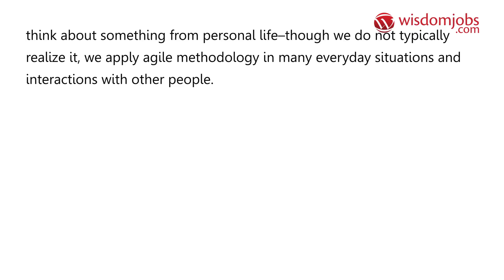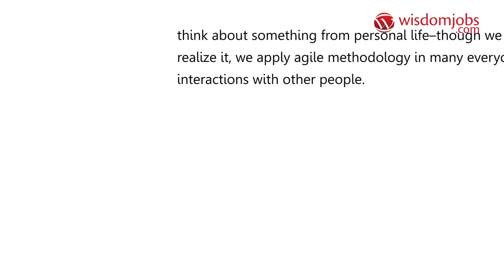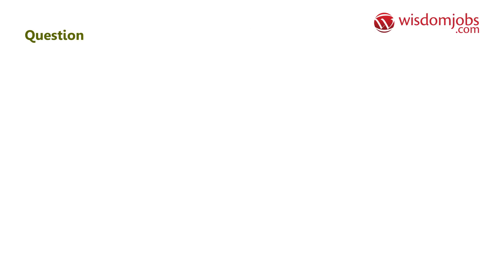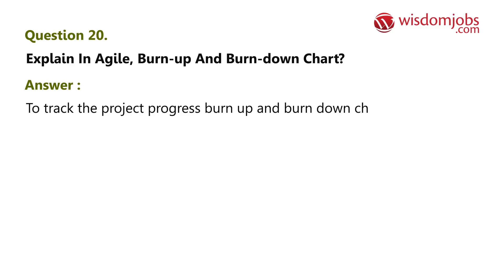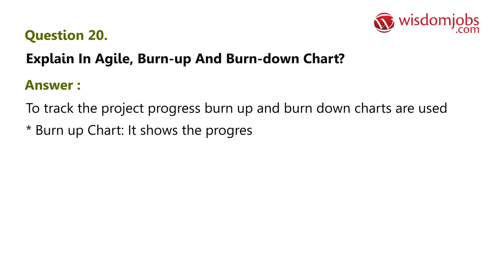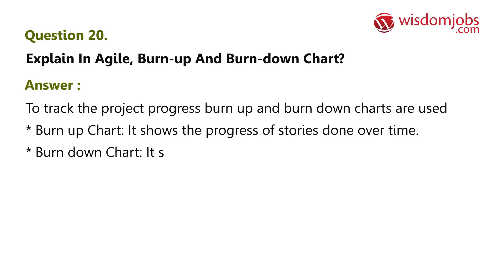Question 20: Explain burn-up and burn-down charts in agile. Answer: Burn-up and burn-down charts are used to track project progress. A burn-up chart shows the progress of stories done over time. A burn-down chart shows how much work was left to do over time.